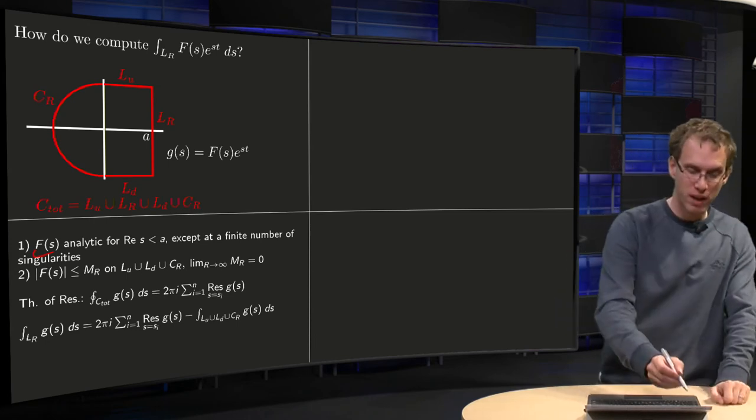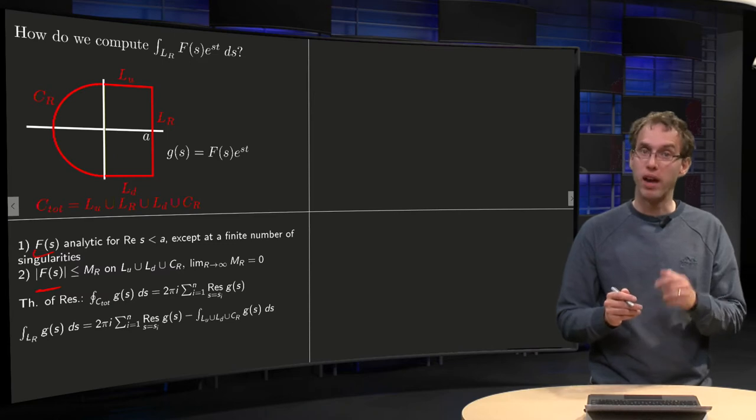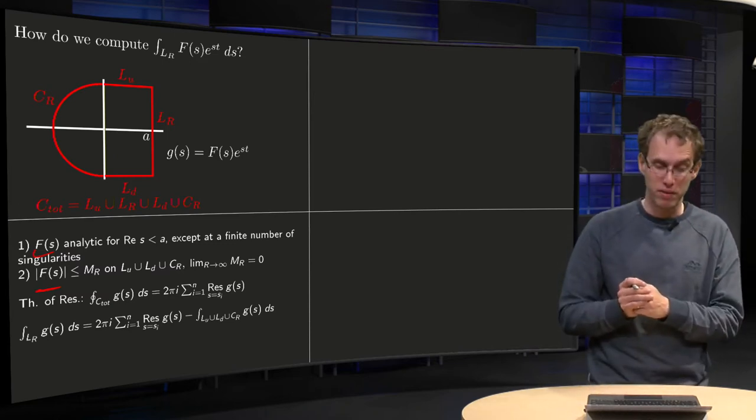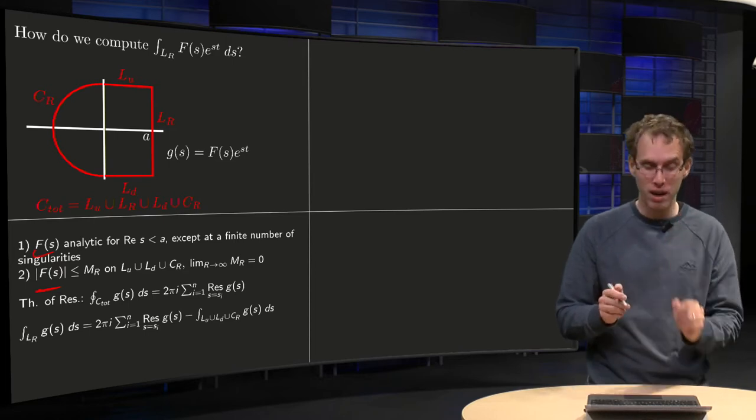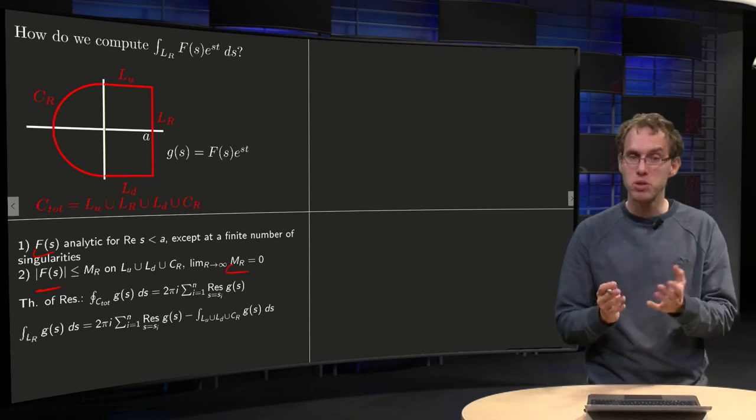And suppose furthermore that your capital F(s) is bounded by some M_R on L_up, L_down and C_R. Notice we now have the capital F, and it is bounded by some constant M_R, which has to go to zero.